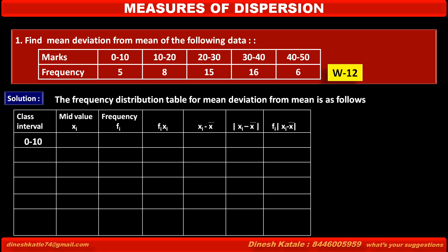The first class interval is 0 to 10. The mid-value of this class interval is (0 + 10) / 2 = 10 / 2 = 5. The frequency for this class interval is given as 5. So the product fi·xi is 5 × 5 = 25.